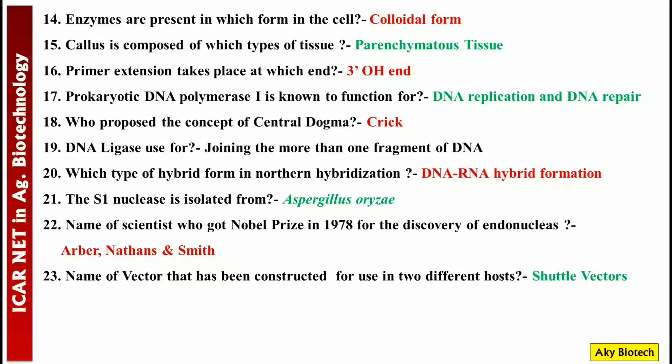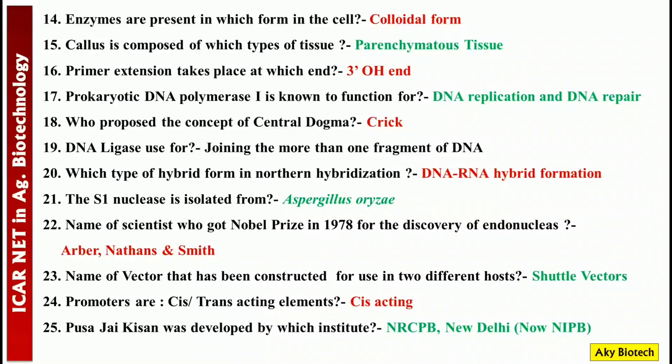Question 23: Name the vector that has been constructed for use in two different hosts — they are called shuttle vectors. Question 24: Promoters — whether cis or trans acting? — They are cis-acting elements. Question 25: Pusa Jai Kissan was developed by which institute? — It was developed by NRCPB, New Delhi, now called NIPB.